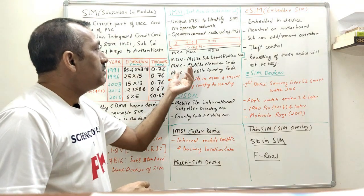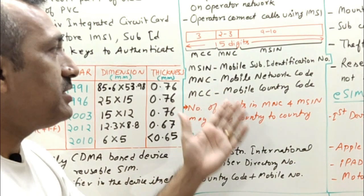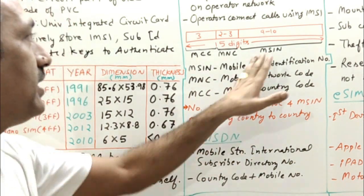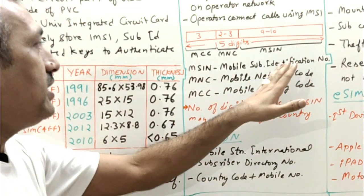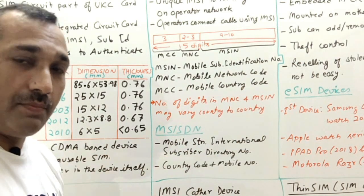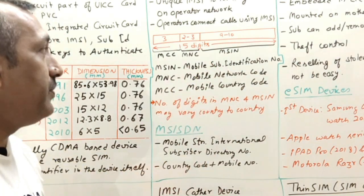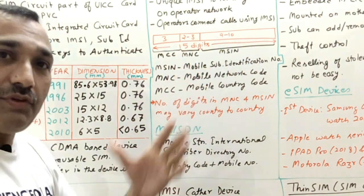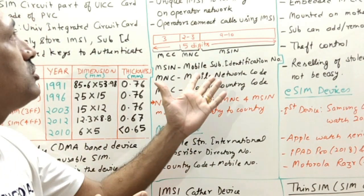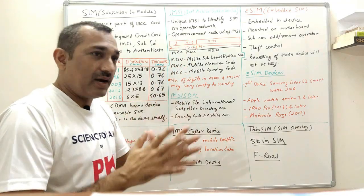MCC is Mobile Country Code, MNC is Mobile Network Code, and the last nine to ten digits are the Mobile Subscriber Identification Number. This format can change from country to country. These 15 digits together are used to identify the SIM card and are called the IMSI.